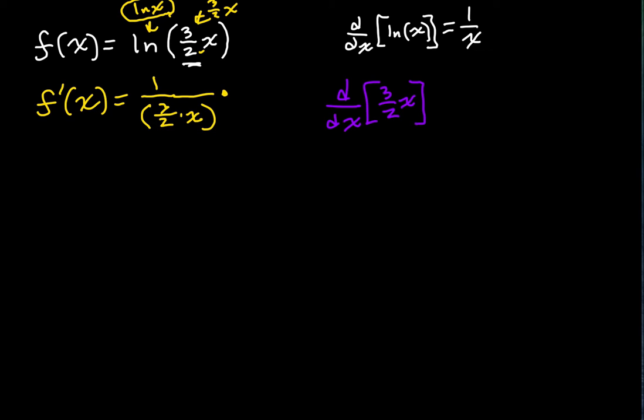The derivative with respect to x of 3 halves x, right? This is just a linear function. It's going to have a constant derivative. We can just use a power rule to solve this. That's x to the first. We bring it out, subtract 1, x to the 0. That's just going to give us 3 halves. The derivative of that is just going to be the slope of that line, which is 3 over 2.